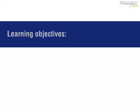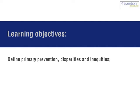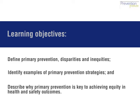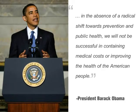After completing Module 1, you will be able to define the terms primary prevention, health disparities, and health inequities. You will also be able to identify examples of primary prevention strategies and describe why primary prevention is vital to achieving equity in health and safety outcomes.